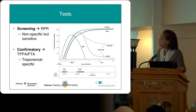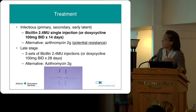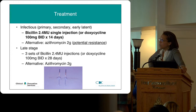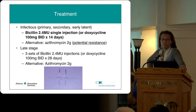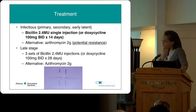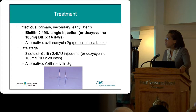Regarding treatment — we'll be supporting you through it. Bicillin for infectious syphilis — primary, secondary, and early latent — is two shots of 2.4 million units in total. You can also give doxycycline 100 mg BID for 14 days, or azithromycin, but our first-line treatment is bicillin. For late-stage syphilis, it's three sets of bicillin over three weeks. There are alternatives, but we'd prefer folks using bicillin whenever they can.